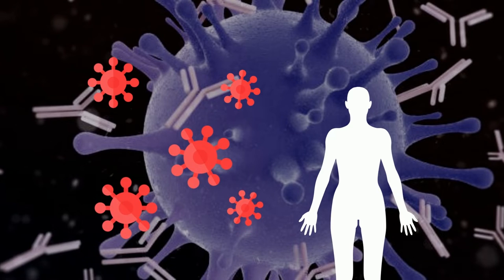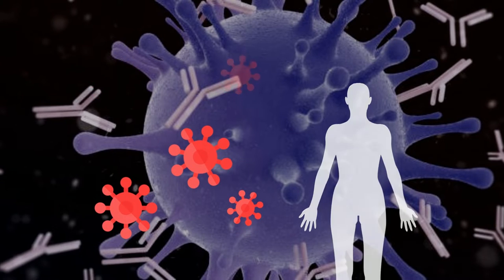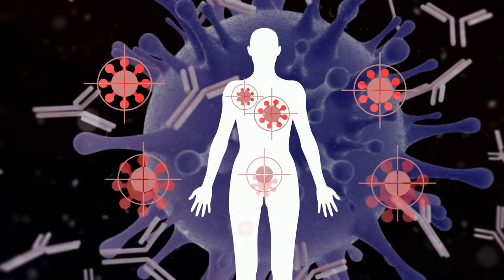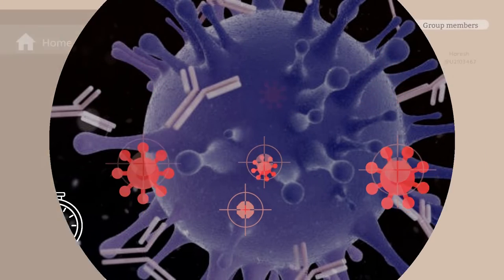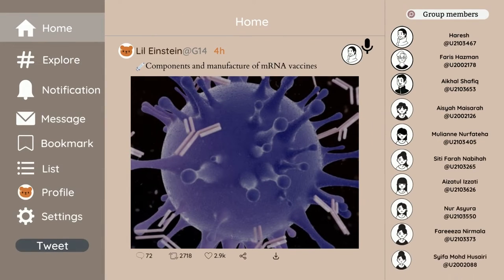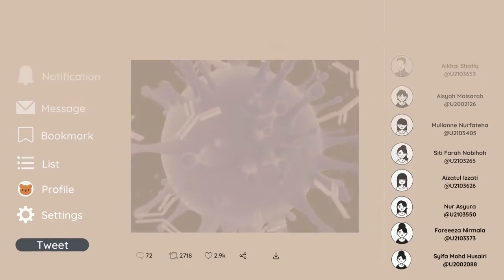For example, suppose a person is exposed to a virus after receiving an mRNA vaccination. In that case, antibodies can quickly recognize it, attach to it, and mark it for destruction before it can cause serious illness.